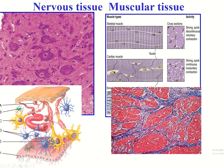This is the nervous tissue — this is the neuron, and the tiny bluish dots are the neuroglia. So in nervous tissue there is no extracellular matrix; what appears between cells are actually the processes of the neurons and neuroglia. This is the muscular tissue — this is the muscle cell and the surrounding extracellular matrix.